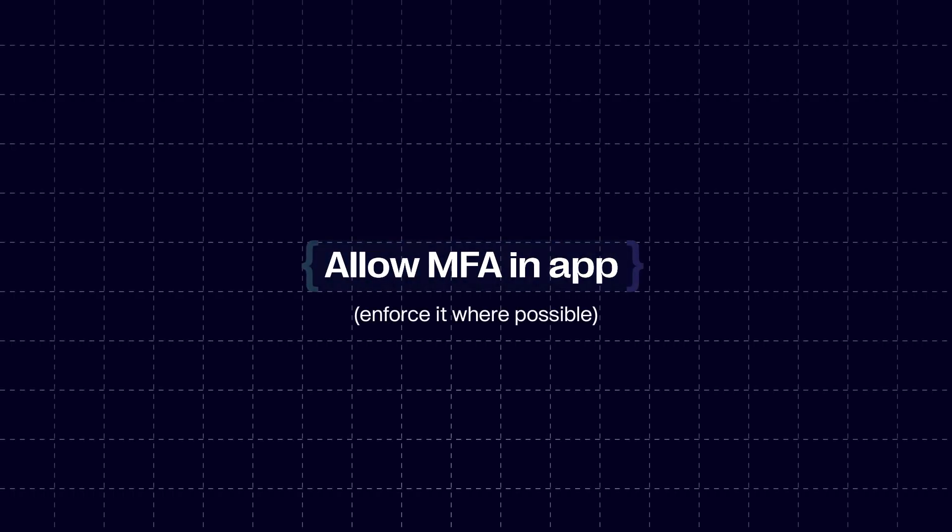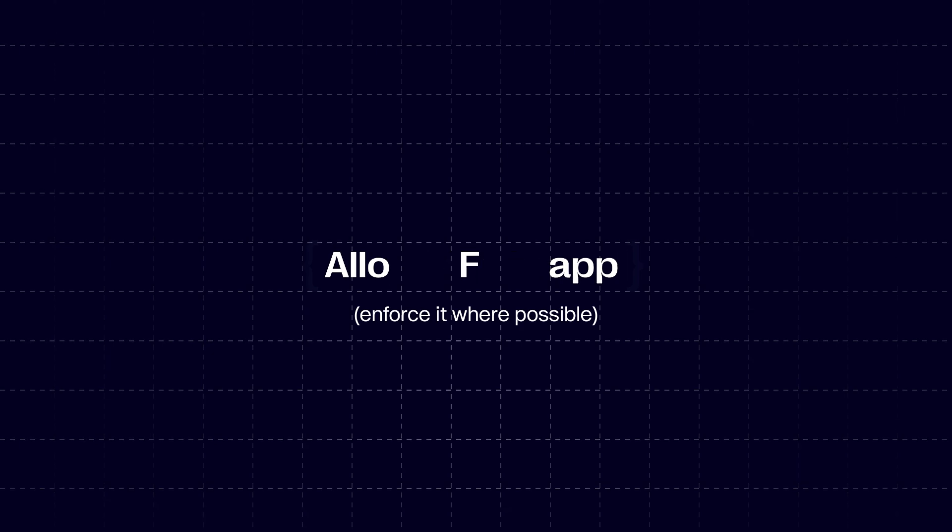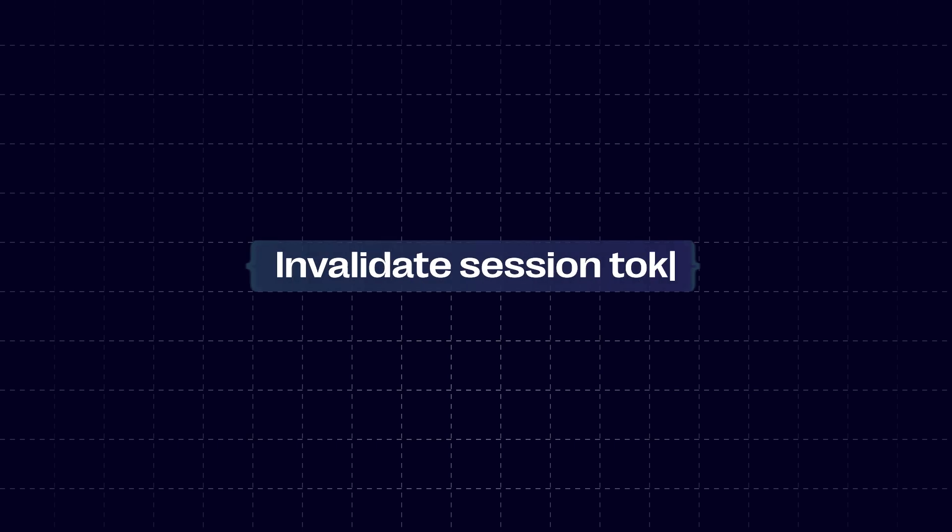Rate-limit login attempts. Make sure you have a mechanism in place so that if someone tries to log in multiple times with wrong passwords, they get blocked at some point. Always make sure you have multi-factor authentication available in your application, and for sensitive accounts it's a good idea to force people to use it. We should all get used to using MFA by default. When dealing with session tokens, make sure you invalidate them after a period of time and also upon triggering events, like a user logging in on a new device.